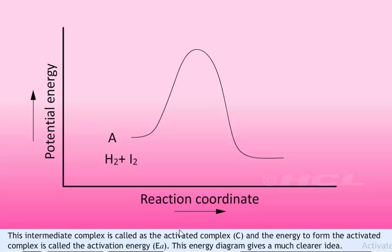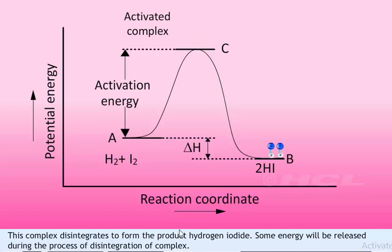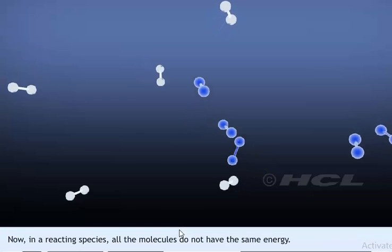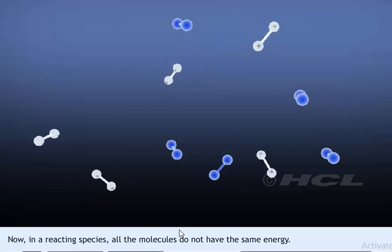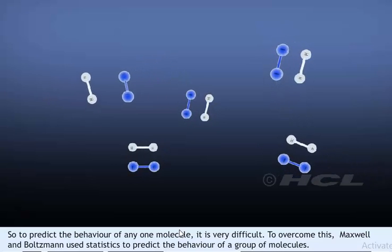The energy diagram gives a clearer idea. Initially, hydrogen and iodine molecules do not have sufficient energy, but when they acquire the activation energy they form the activated complex, which then disintegrates to form the product hydrogen iodide. Some energy is released during disintegration, depending on the energy of the initial reactants and the final product. In a reacting species, all molecules do not possess the same amount of energy, so it is very difficult to predict the behavior of any one molecule.